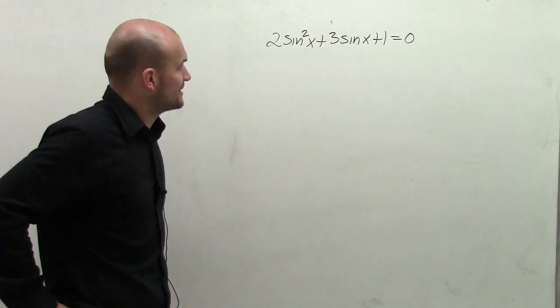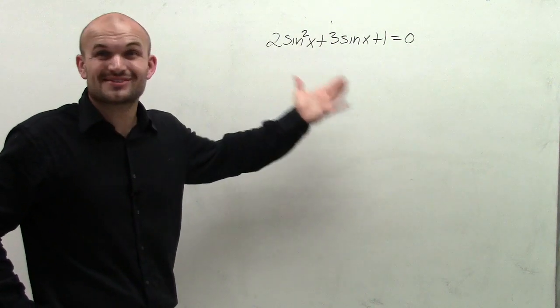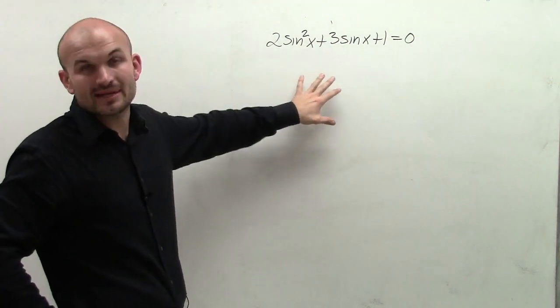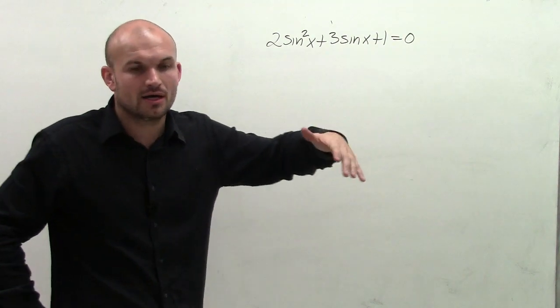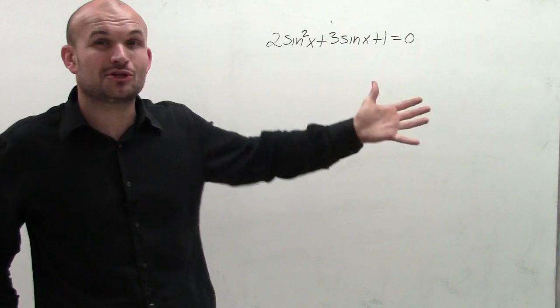When looking at a problem like this, we can't isolate the variable because we have two variables, and we can't combine them because they're not even like terms. So when looking into other equations, especially when we have one of a quadratic form, we always want to look into factoring.